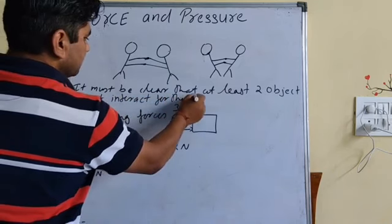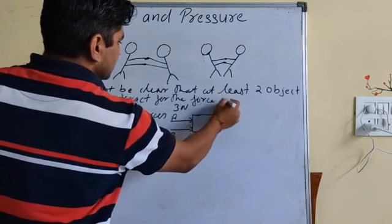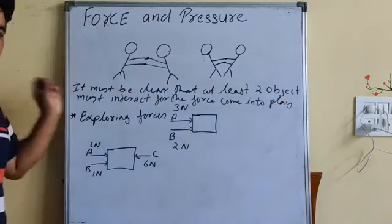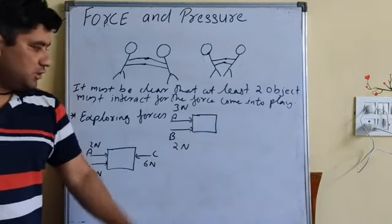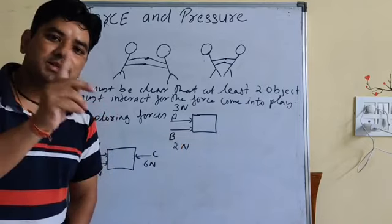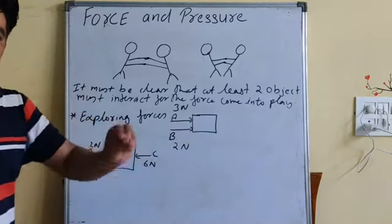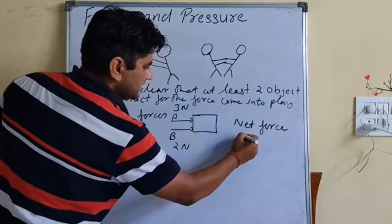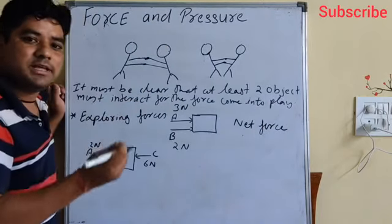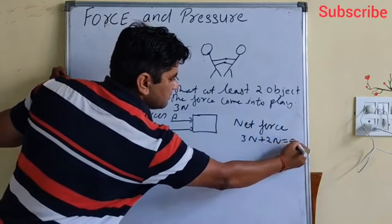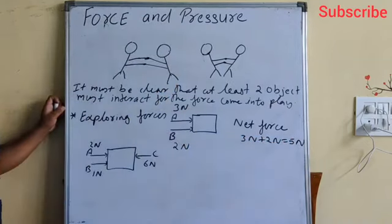Next, let us discuss combining forces. Here is an object and two persons A and B applying forces from the same direction. When forces are applied in the same direction, the net force will be the sum of the two forces. So three Newton plus two Newton will be five Newton.